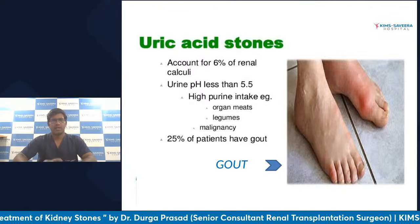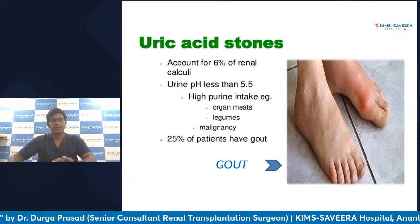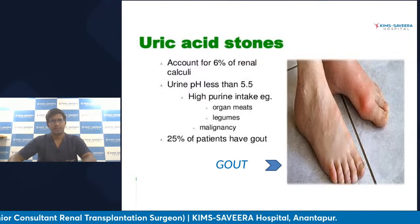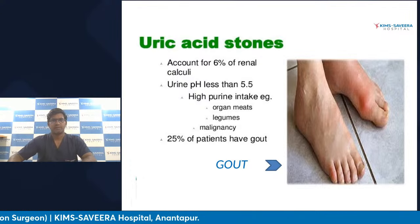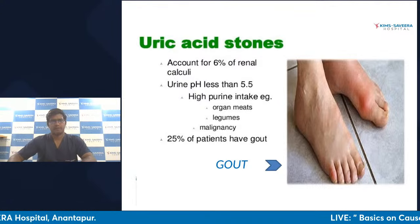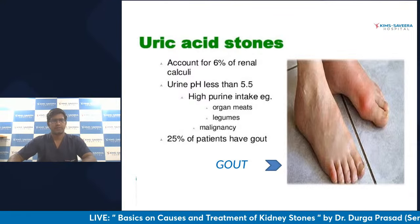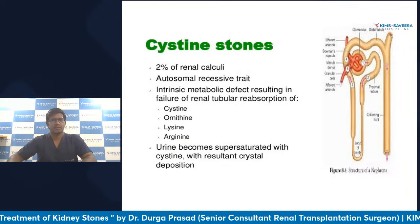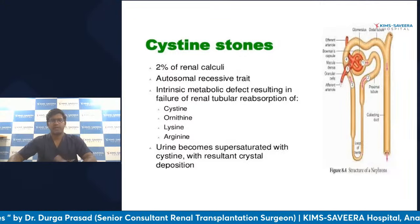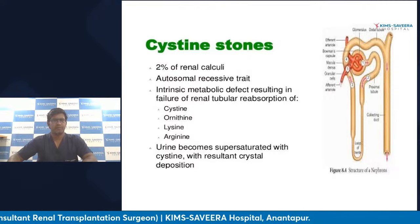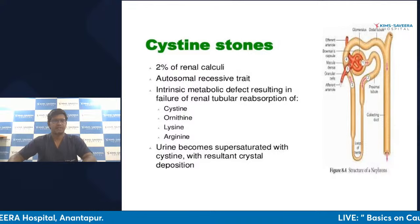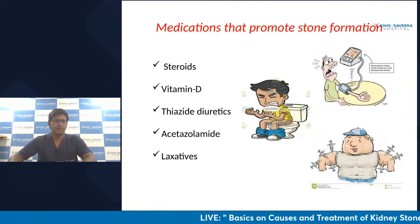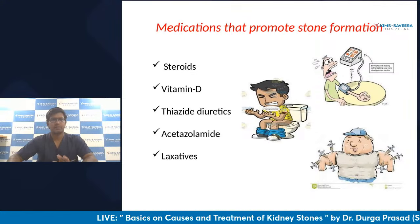Uric acid stones are associated with high blood uric acid levels, and this is a reversible condition. If we do a blood test and find elevated uric acid levels, we can start a simple tablet called febuxostat, which will decrease uric acid levels and easily prevent stone formation. Cysteine stones are a genetic condition seen in less than one to two percent of patients — very rarely — because urinary cysteine amino acid levels precipitate to form cysteine stones.